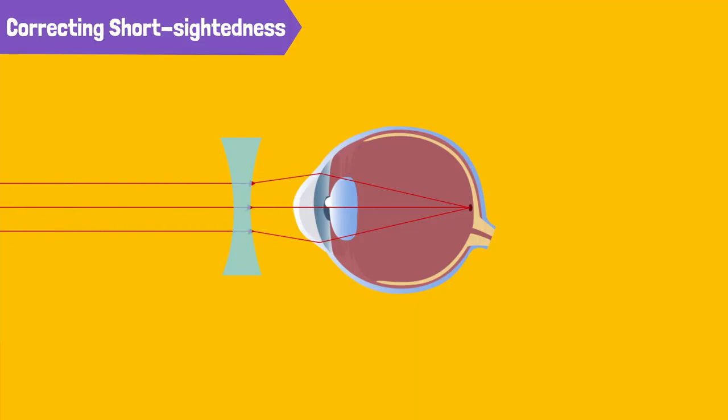The lenses in my glasses are concave lenses. When light rays go through the glasses, they diverge. These rays then converge through the convex lenses of my eyes, allowing the image to focus right on my retina. And this makes it easy for me to see everything clearly.